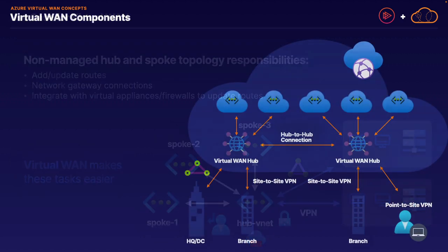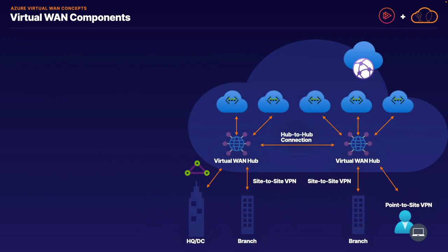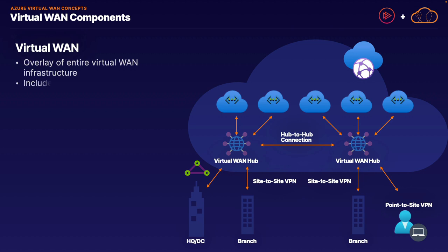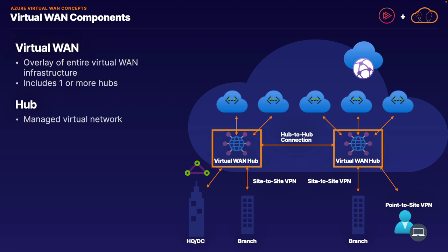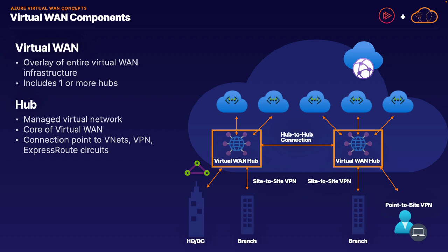Let's take a quick high-level look at the different components of a typical Virtual WAN implementation, of which we can see an example topology on the right side. At the highest level, we have the Virtual WAN service itself, which is simply an overlay of the entire Virtual WAN infrastructure, including one or more hubs and all the different virtual networks directly connected to each hub. The hub, labeled Virtual WAN Hub in the middle, is simply a managed virtual network — it is the core connection point for all your Azure virtual networks and hybrid connections like VPN and ExpressRoute.